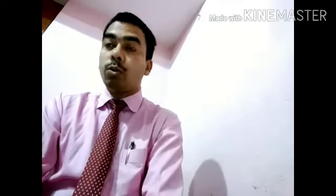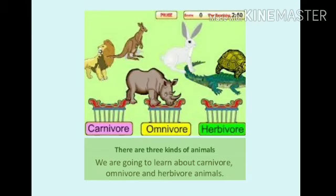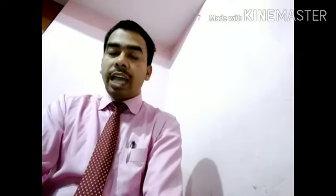On the basis of their feeding habits, different animals are classified into different groups. Some animals eat only plants. Some animals eat only flesh or body parts of other animals. Some animals eat both plant products and animal products. According to their eating habits — as they take food — all animals are classified into different groups.